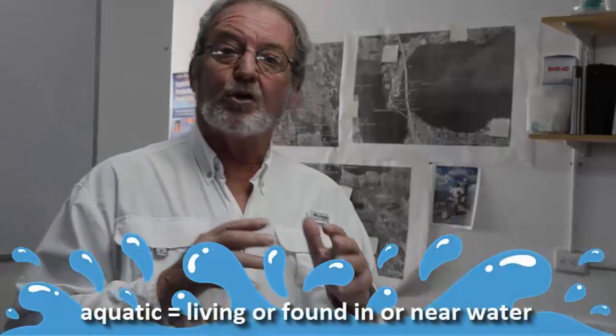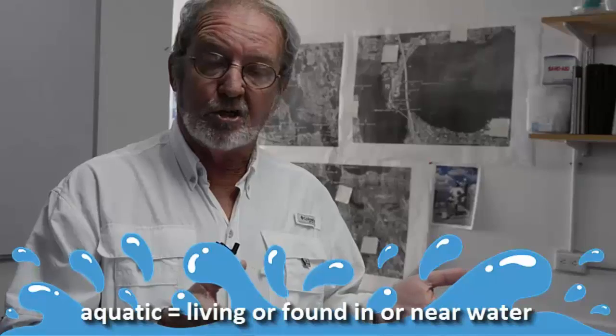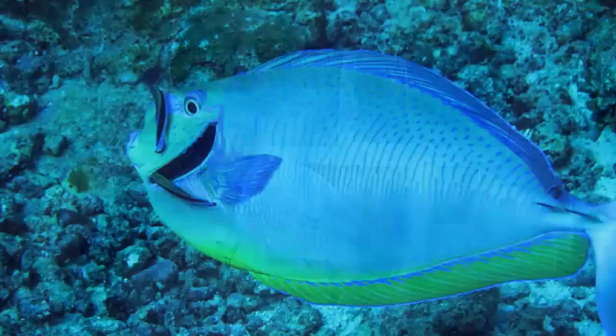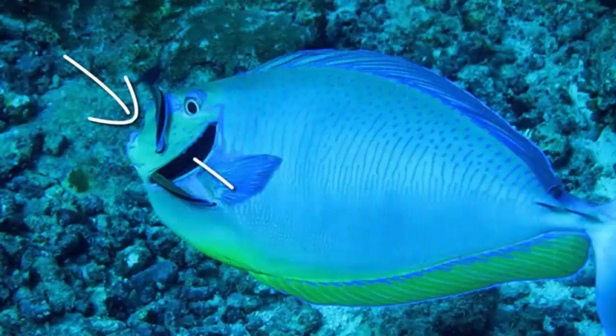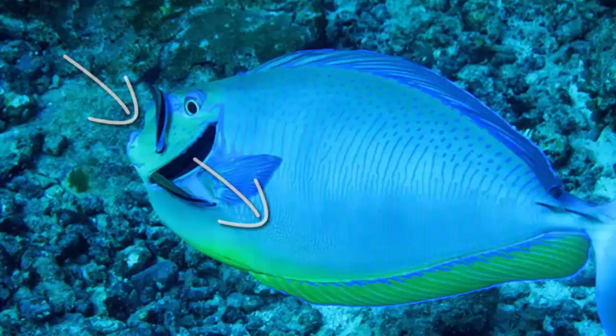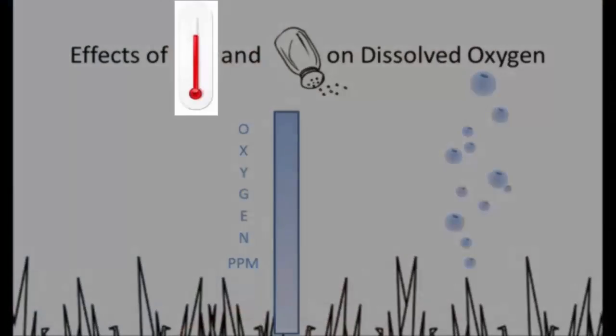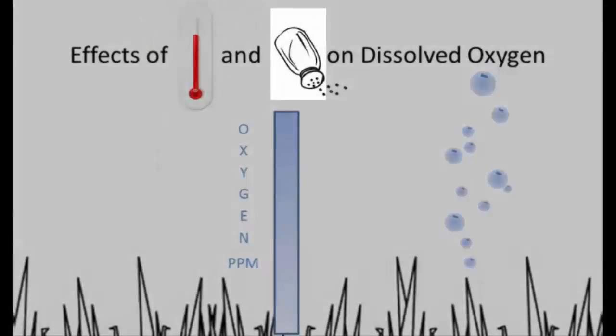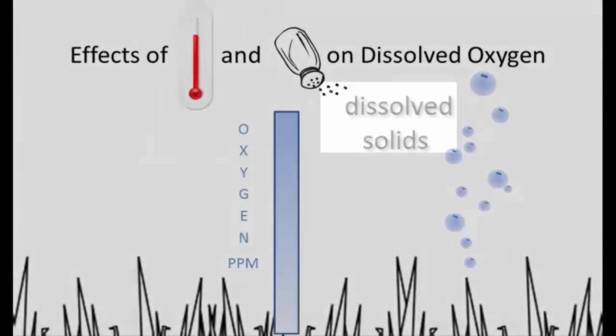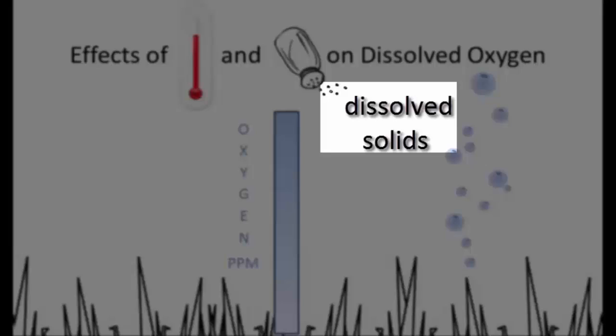Now if you're an aquatic animal like a shrimp, a crustacean or a fish and you breathe through your gills, you have to extract the oxygen from the water and it becomes a different story because the amount of oxygen that is in water is dependent upon its temperature and also dependent upon its salinity or the amount of any dissolved solid that happens to be in the water.